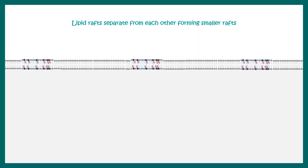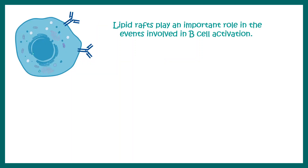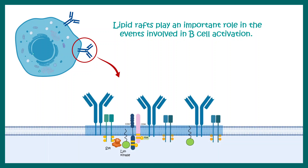Let's talk about the functional aspect of lipid rafts with one example. Lipid rafts play a very important role in the events of B cell activation. All the B cell receptors, which are membrane-bound antibodies, are associated within these lipid rafts. This lipid raft holds several kinases such as Lyn and Syk all together in this signaling unit, and this allows the signaling to be activated in a stronger fashion.